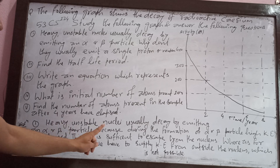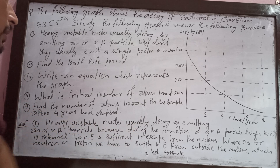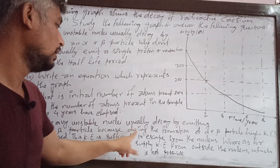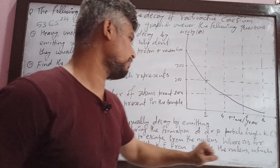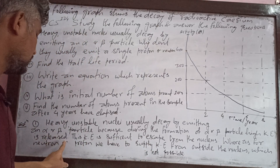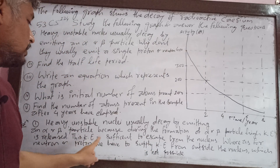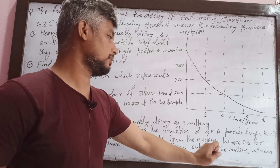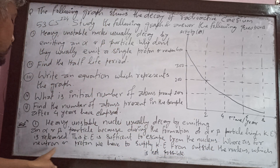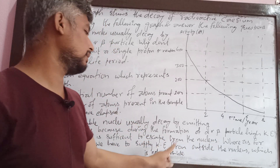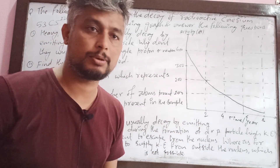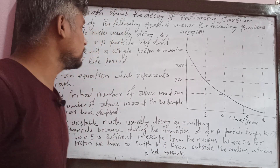Unstable nuclei usually decay by emitting an alpha or beta particle because during the formation of an alpha or beta particle, high kinetic energy is released. This kinetic energy is sufficient to escape from the nucleus. Whereas for a neutron or proton, we would have to supply kinetic energy from outside the nucleus, which is not possible.